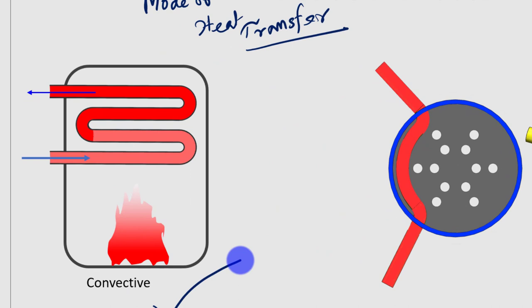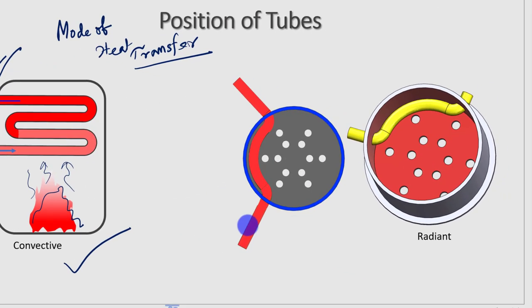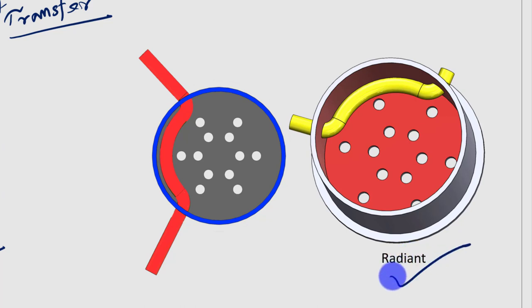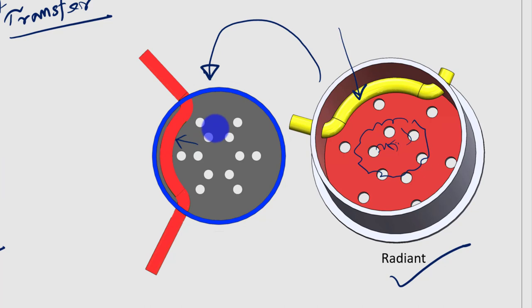In convective superheaters, the furnace is located at the bottom and combustion gases are going out. Because the superheater tubes are located above the furnace, these tubes receive convective heat — that is why they are called convective superheaters. In radiant superheaters, the superheater tubes are located around the furnace, receiving radiant heat from the furnace. This can also be shown as a top view where the radiant heat is received by the superheater tubes.